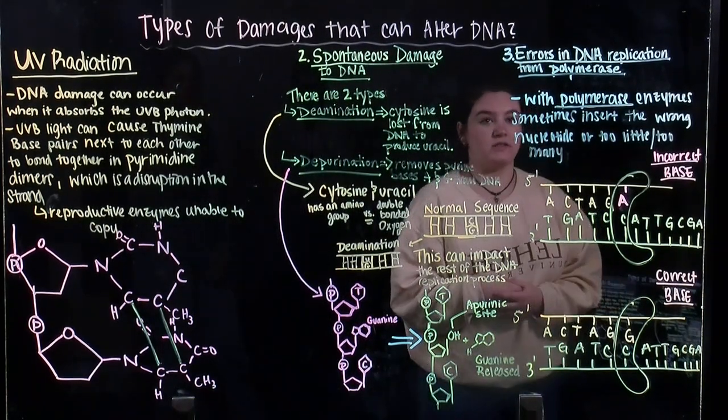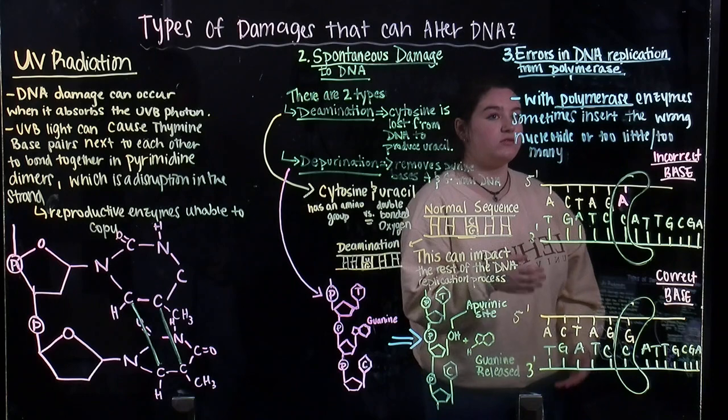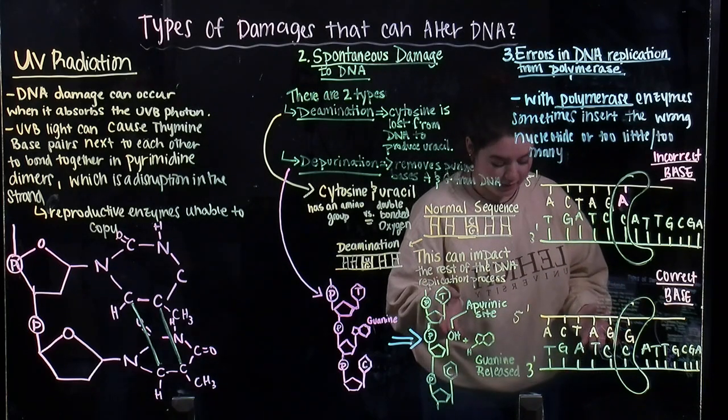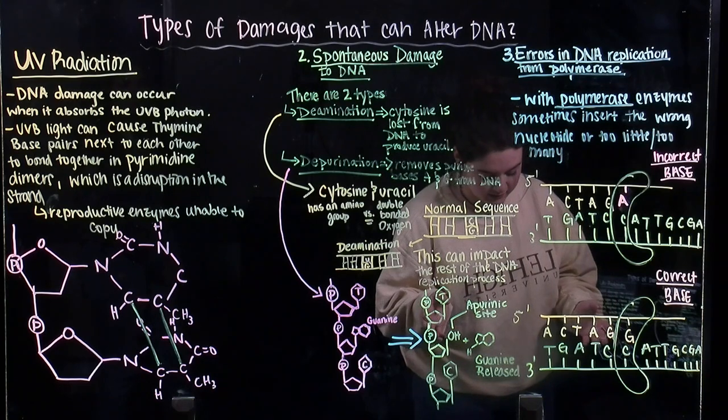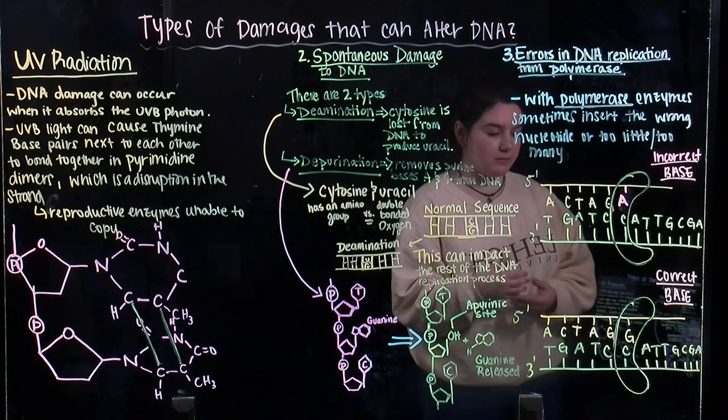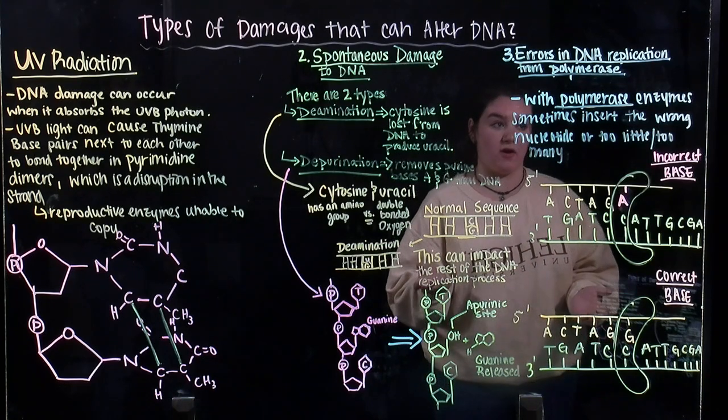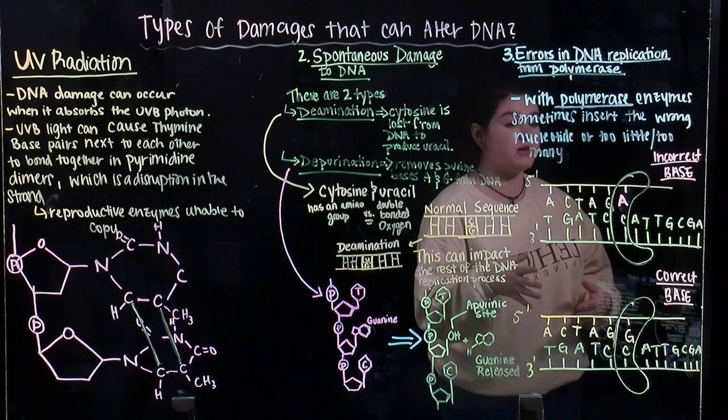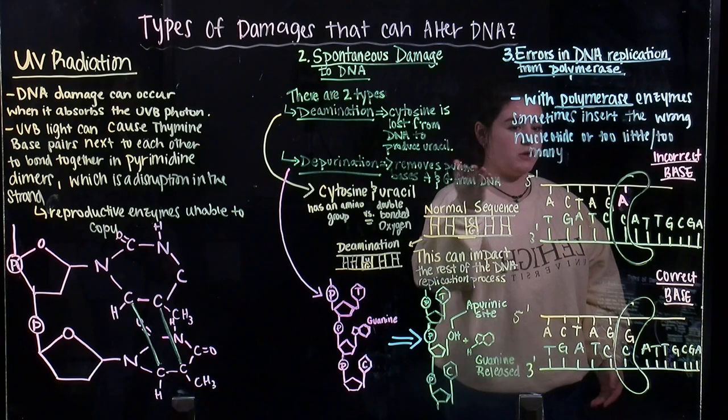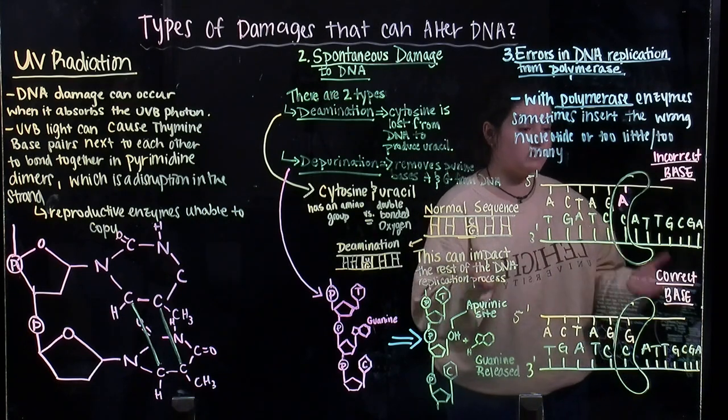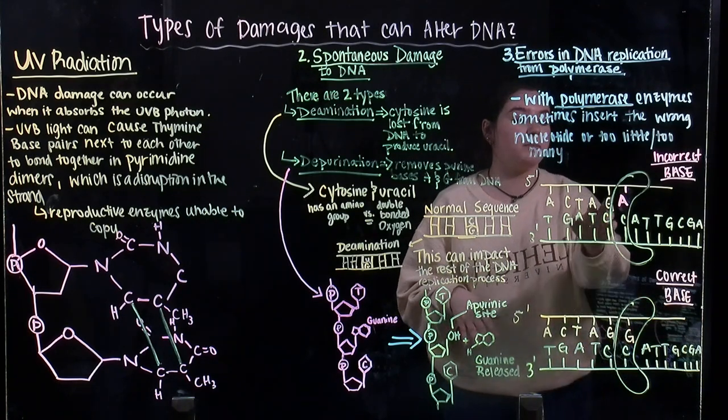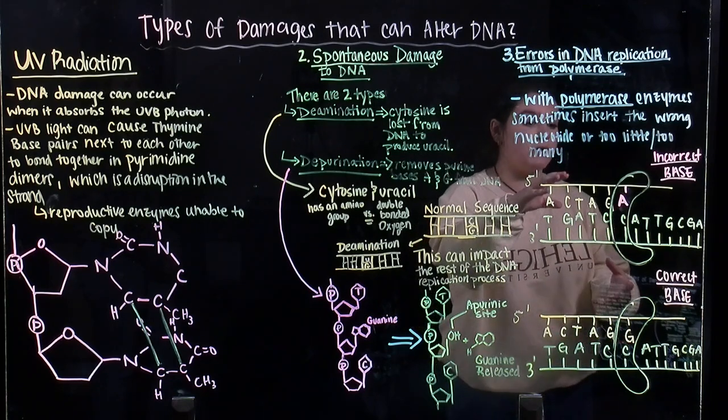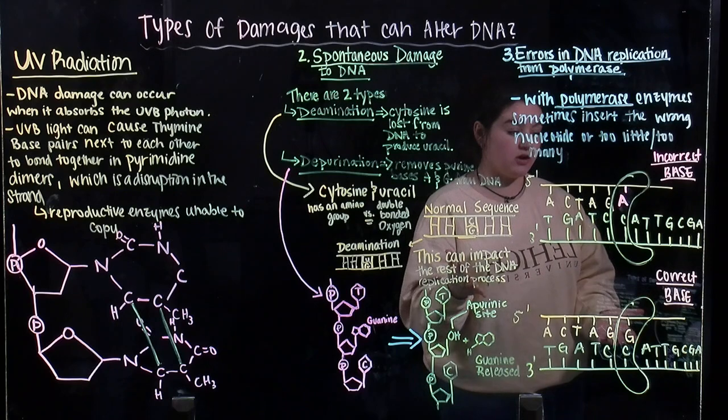Another mutation that can occur is errors in DNA due to the replication from polymerase. Polymerase is an enzyme that basically makes a polymer within DNA or RNA, and it can sometimes insert too many or too little nucleotides, and sometimes even the wrong nucleotide. As you see in this example, which is an incorrect base, it puts adenine instead of the correct base, which is guanine, and the polymerase is what makes this change occur.